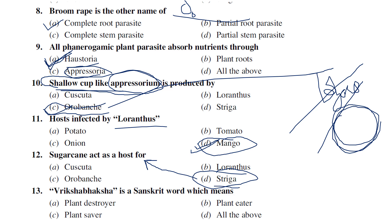Vrikshabaksha is a Sanskrit word: vriksha means plant, bhaksha means eater — so vrikshabaksha means plant eater. In contrast, phytophthora: phyto means plant, thora means destroyer — plant destroyer. The name vrikshabaksha was coined by N. Tanaka.